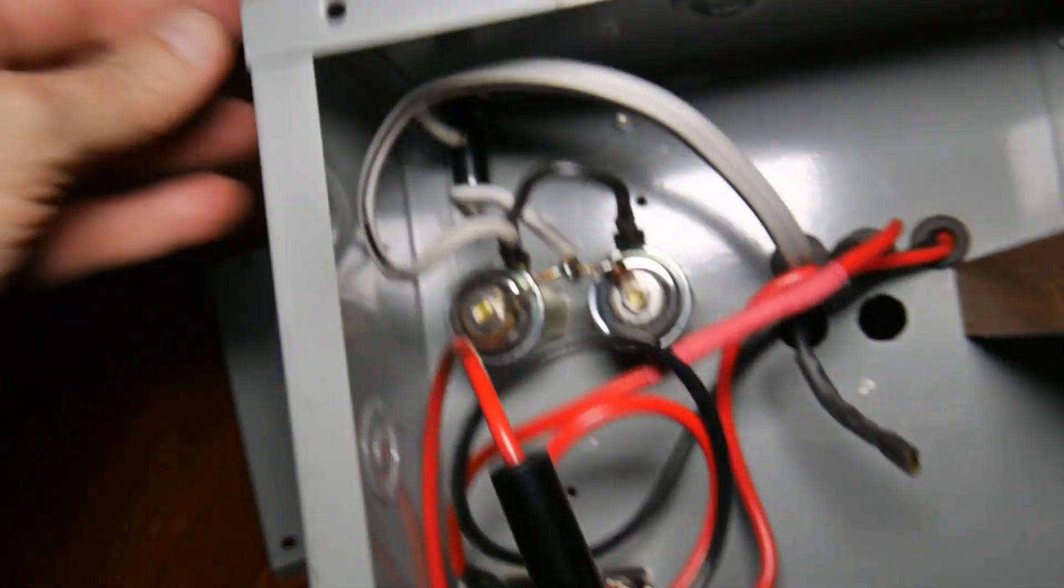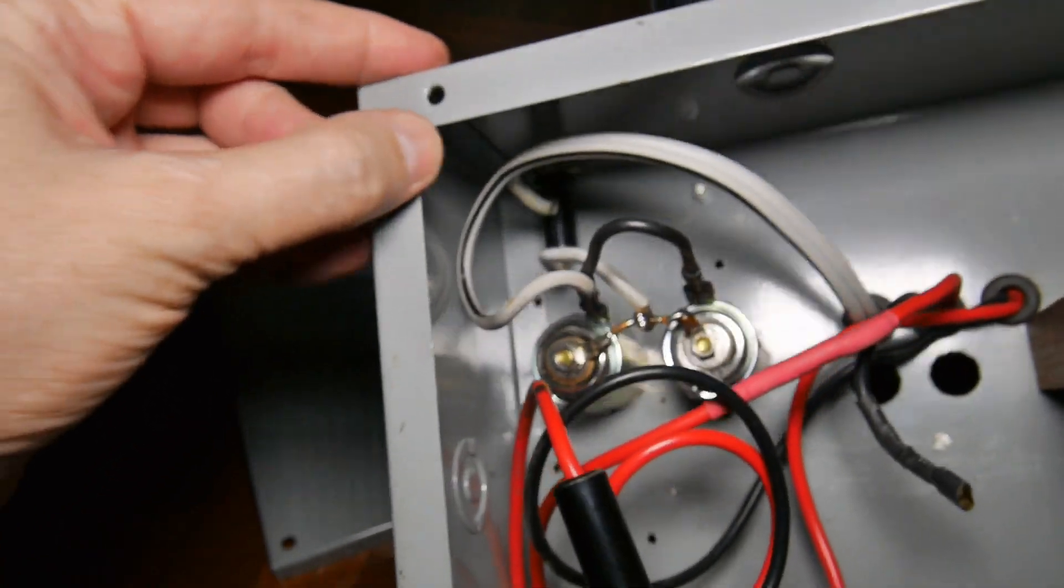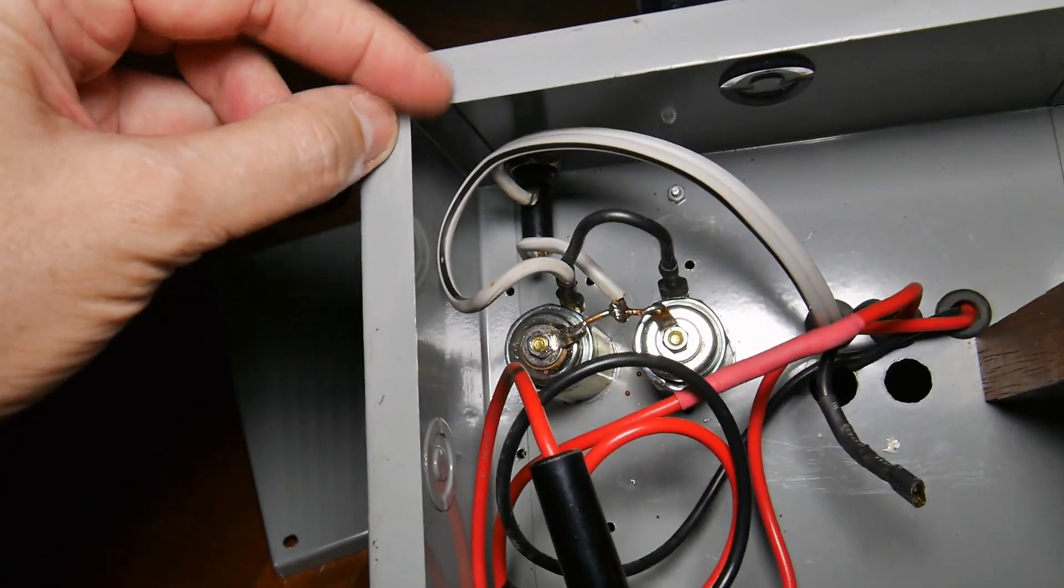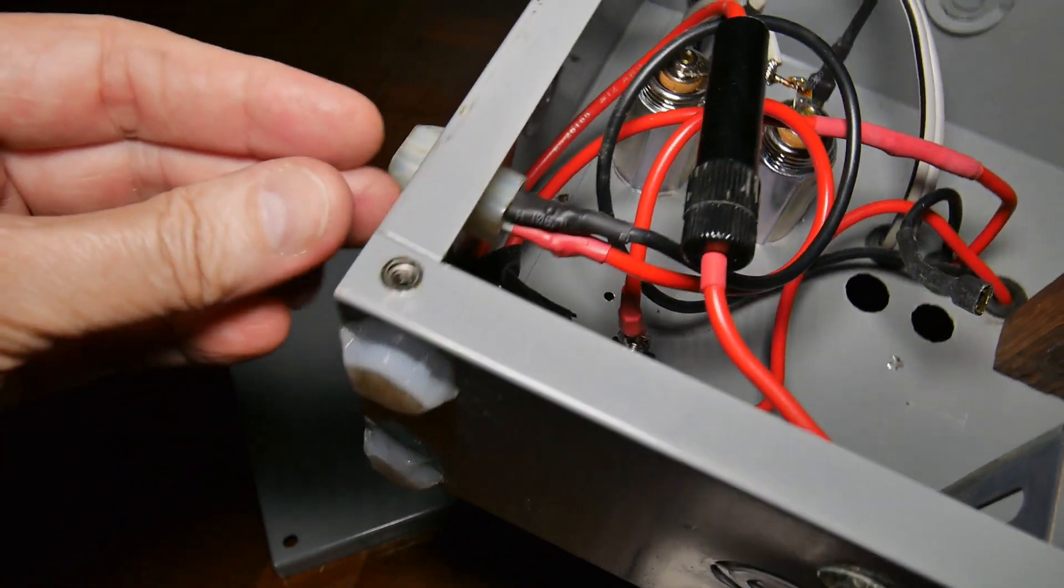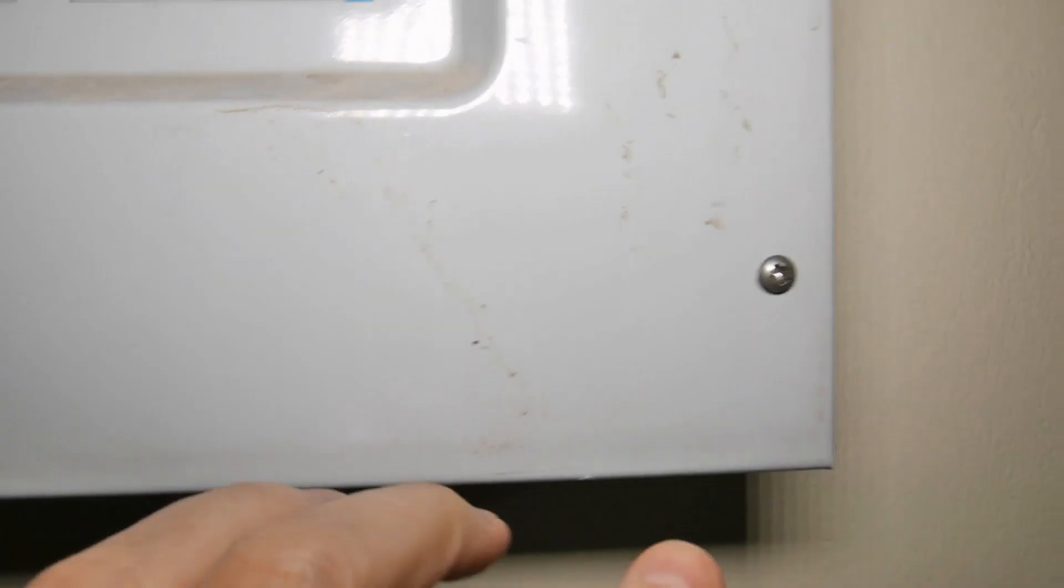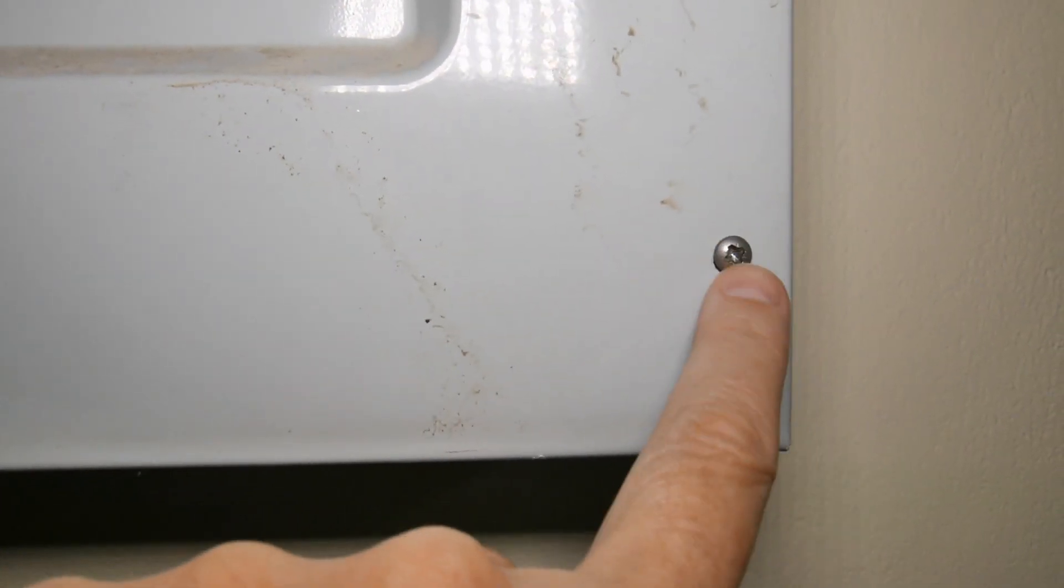And the benefit of course is it's much more reliable than just a threaded hole through sheet metal. These get cross-threaded, they wear out quickly. For example, in your electric box, these holes have gotten stripped out.